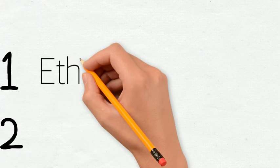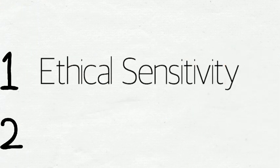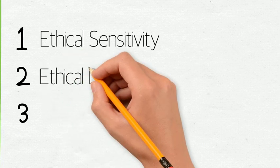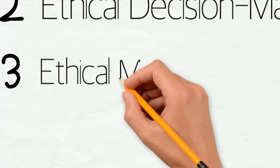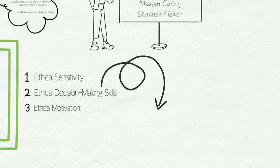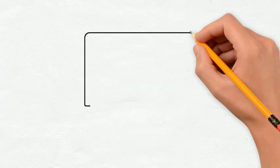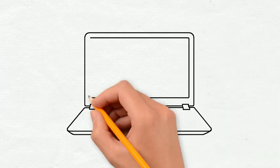Now let's talk about the three important elements of moral literacy. First, ethical sensitivity. Second, ethical decision-making skills. Third, ethical motivation. Each of these key elements are so important to understanding the incorporation of moral literacy in your teaching.